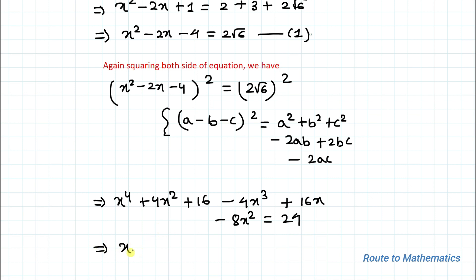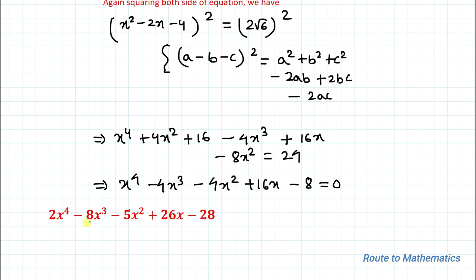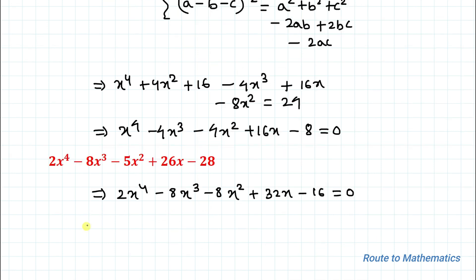Taking 24 to the left hand side, we get plus 16 minus 24, which becomes minus 8 equals 0. So the equation simplifies to x⁴ minus 4x³ minus 4x² plus 16x minus 8 equals 0. To get the 2x⁴ term we need, let's multiply the entire equation by 2, giving us 2x⁴ minus 8x³ minus 8x² plus 32x minus 16 equals 0.